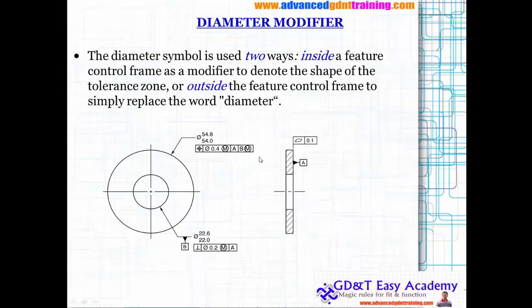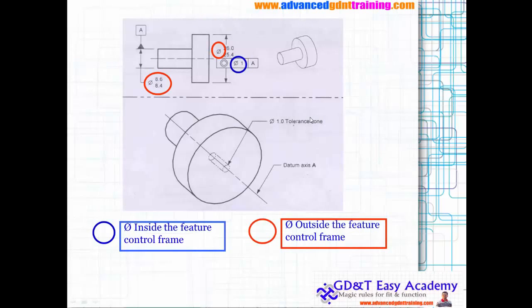This is the mobility interface for understanding and interpreting the datums. This is one example where you can see the external use of phi, and here you can see the internal use of phi inside the feature control frame. This is the tolerance zone.